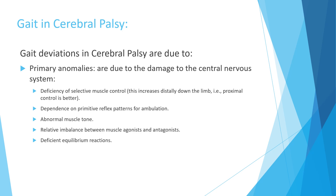Children with cerebral palsy have abnormal gait due to primary, secondary, and tertiary anomalies. Primary anomalies are directly related to CNS injury: lack of selective muscle control (more distal than proximal), dependence on primitive reflexes, abnormal muscle tone, imbalance between agonist and antagonist — firing both simultaneously — and deficient equilibrium affecting balance.